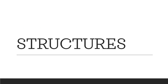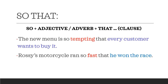Now let's see the structures. So that: the structure is 'so + adjective or adverb + that,' followed by a clause (subject + verb). For example, 'The new menu is so tempting that every customer wants to buy it.' In this sentence, 'tempting' is an adjective describing the menu. That's why we use 'so tempting,' followed by 'every customer wants to buy it' as the effect — in the form of a clause (subject + verb).